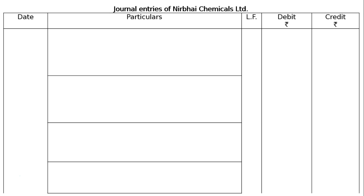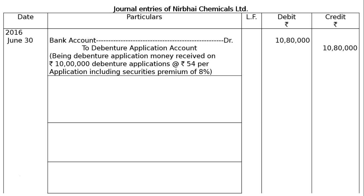We have to draw the format first — Journal Entries of Nearby Chemicals Ltd. We have to draw 5 columns: Date, Particulars, Ledger Folio, and Debit and Credit columns. The last two columns will have Rs. symbols. The date column will start with the year 2016, with June 30th as the starting date.